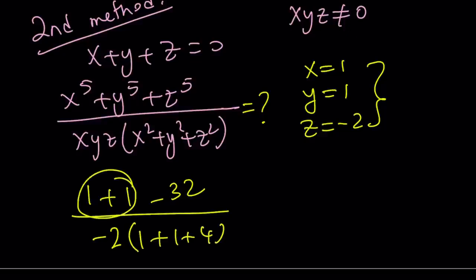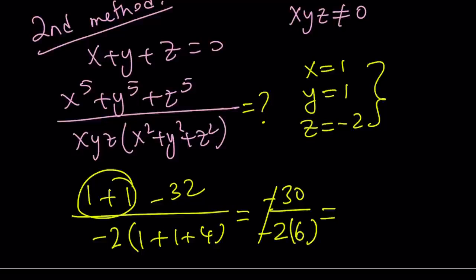So the numerator is 2 minus 32, which is negative 30. The denominator is negative 2 times 6, which is negative 12. The negatives cancel, and we get 30 divided by 12. Dividing by 6 gives us 5 over 2, so the answer is 5 halves — the same as before.